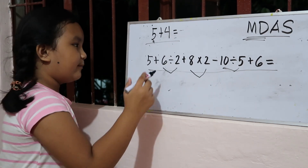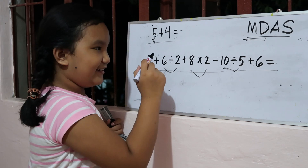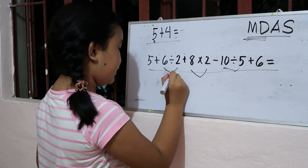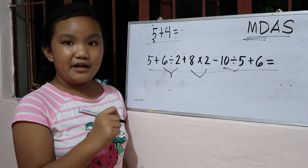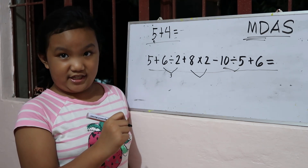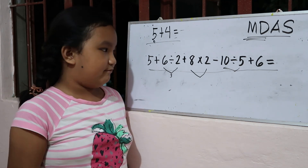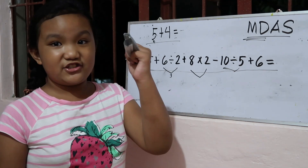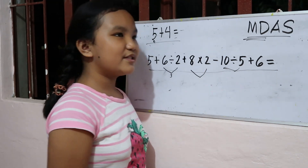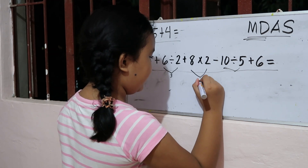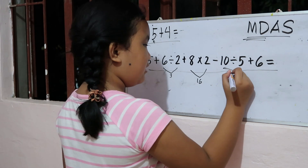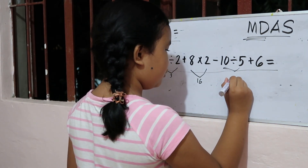Now we need to do six divided by two equals three. Now we just add three to the bottom part. If you are big brain, then don't do this part on the bottom because that will only waste your paper. Six times two — I mean, eight times two equals sixteen. Ten divided by five equals two.